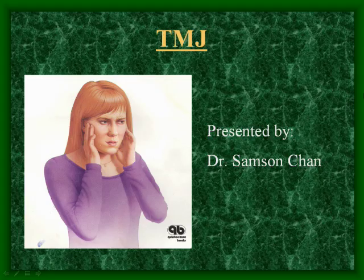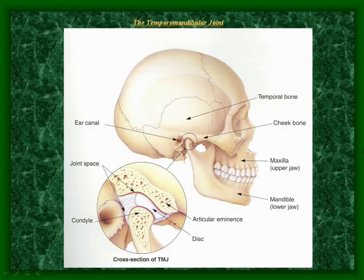TMJ stands for Temporal Mandibular Joint, which is located near each ear, whereas TMD is Temporal Mandibular Joint Dysfunction. It is a common illness found in middle-aged females from the ages of 22 to 45 years. It is called TMD because the dysfunction is found between the temporal bone and the mandibular bone, or lower jaw. It is the only movable joint on the human skull.